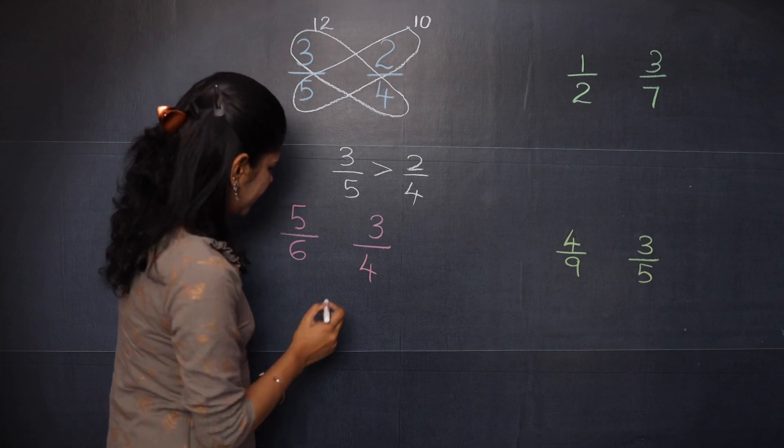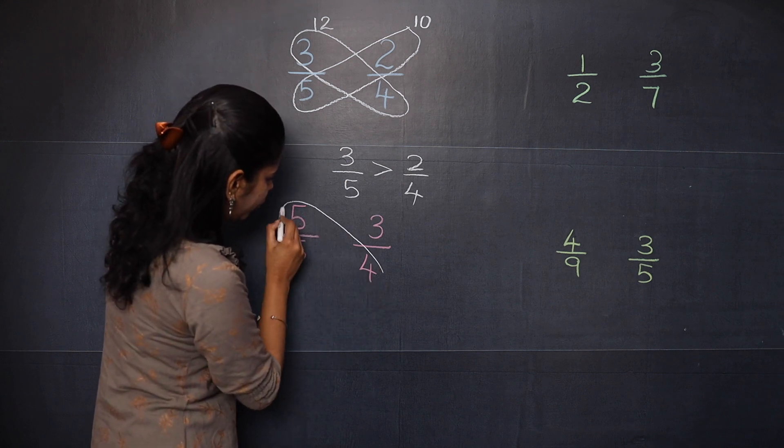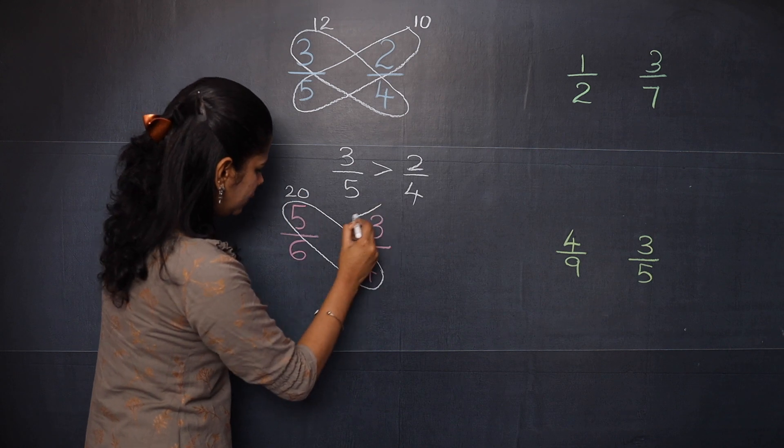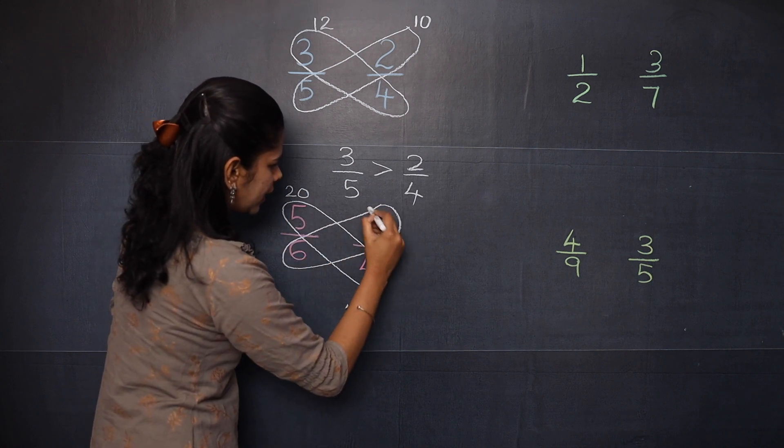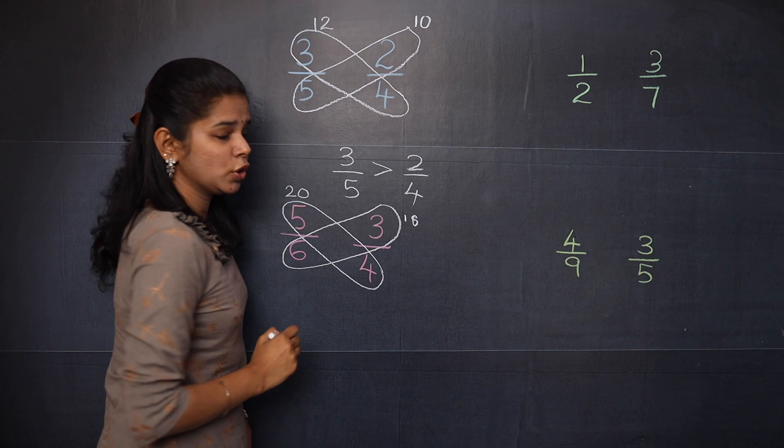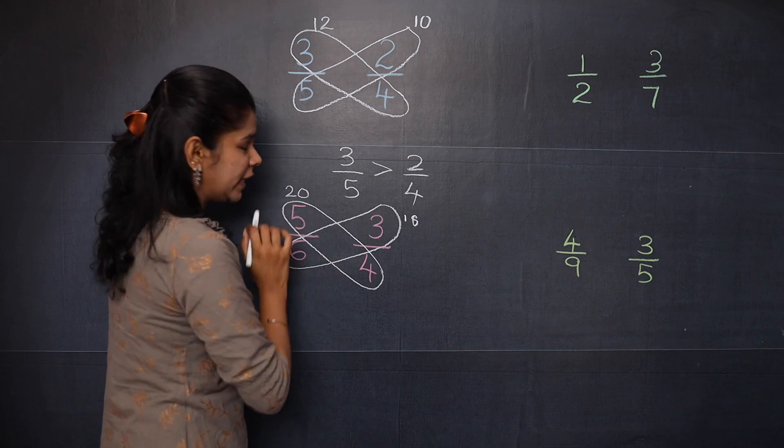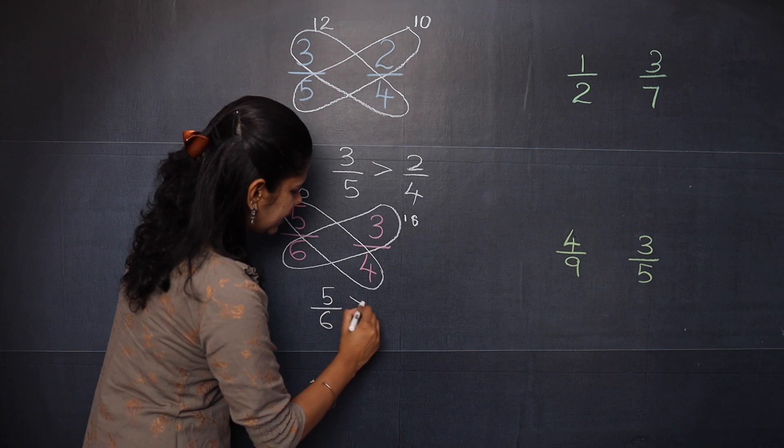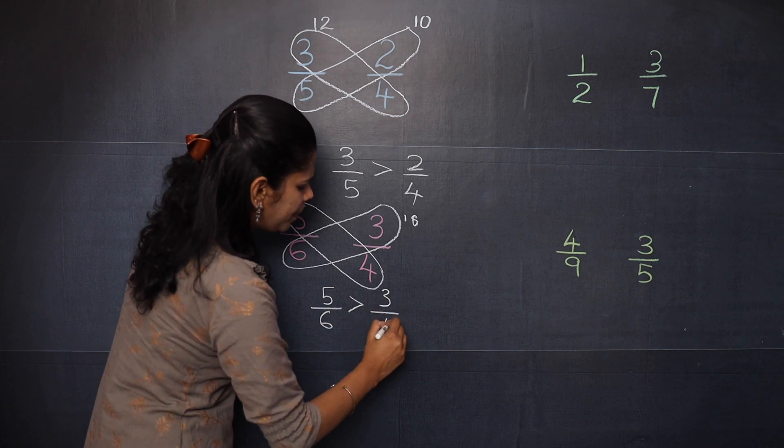Now let's check the next one. Here also you will do 5 into 4, that is 20. Then 3 into 6, that is 18. So which is greater? 20 is greater than 18. That means 5 by 6 is greater than 3 by 4.